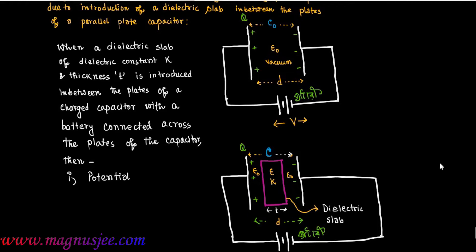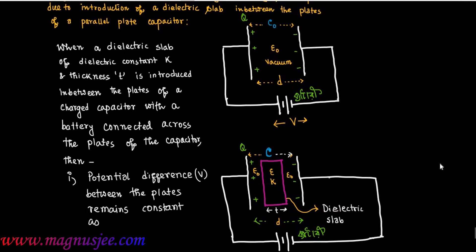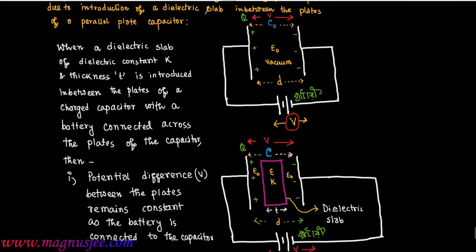When a dielectric slab is introduced in between the plates of a parallel plate capacitor with the battery connected across the plates, the potential difference between the two plates remains constant at V. As the battery is not disconnected from the capacitor, there is a continuous connection between them, and V is both the terminal voltage of the battery and the potential difference between the two plates.